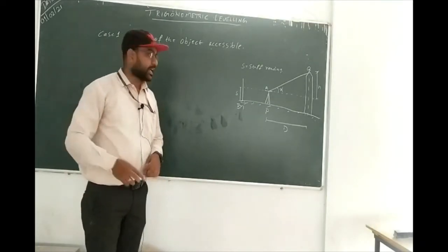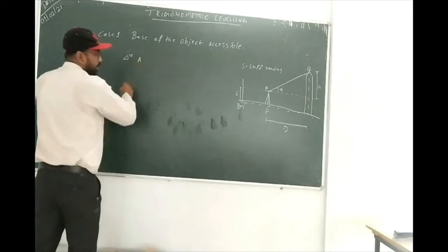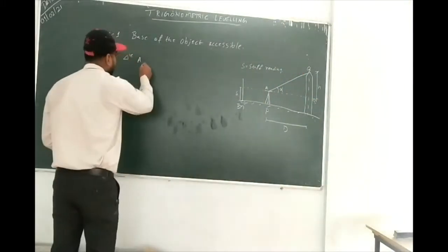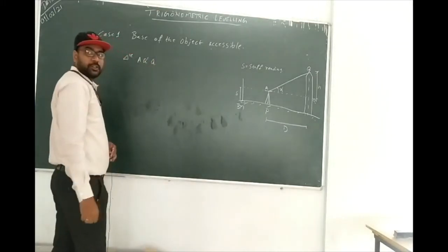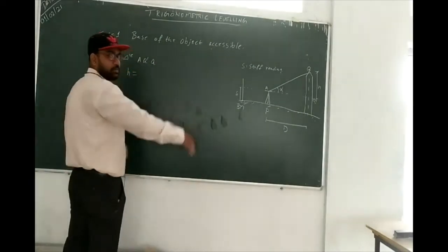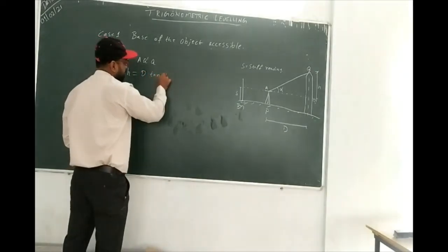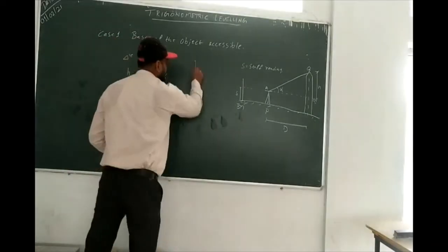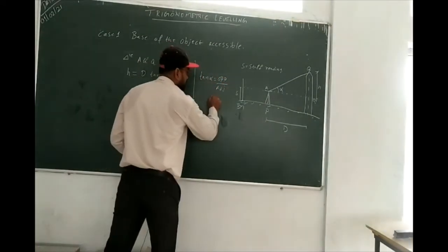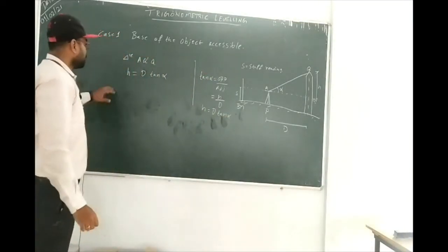Our main goal is to calculate distance and height. Consider triangle A-Q'-Q, which is a right-angle triangle. For getting the height h: tan(alpha) = opposite/adjacent = h/d, therefore h = d·tan(alpha). Now we know h. The staff reading above the benchmark is also noted.